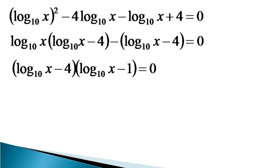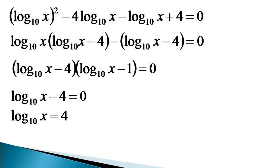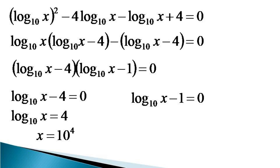This gives us two values. The first value comes from log of x to the base 10 minus 4 equals 0, so log of x to the base 10 equals 4, and from the definition of log, x equals 10 raised to the power 4. The second value comes from log of x to the base 10 minus 1 equals 0, giving log of x to the base 10 equals 1, and so x equals 10.